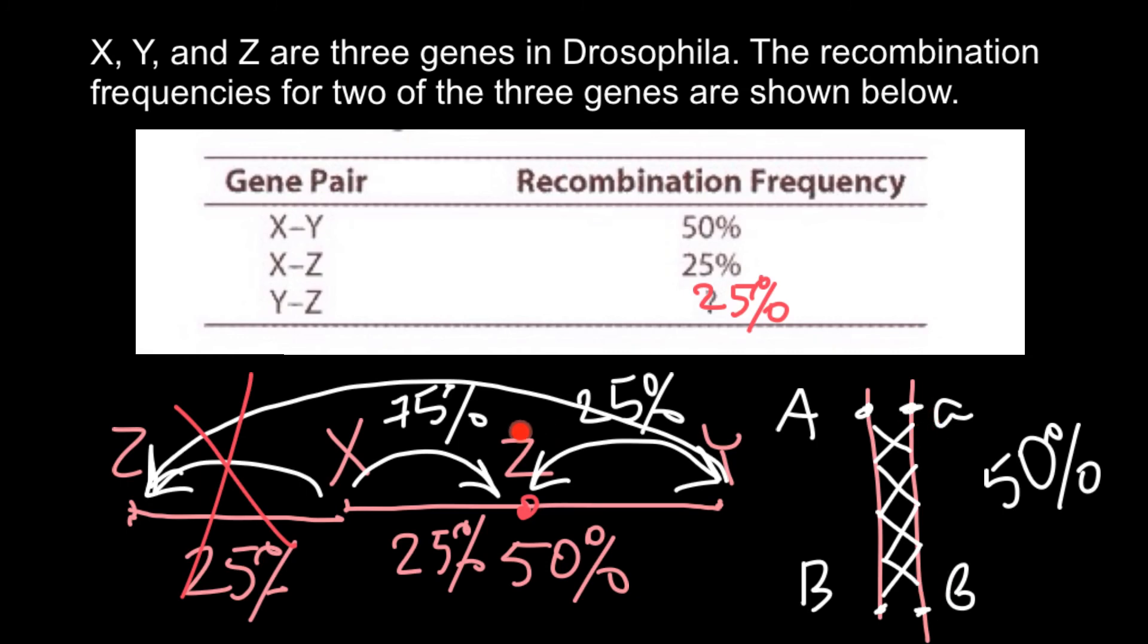So if the question would be in centimorgans, what's the distance between genes Z and Y? We can say 25 centimorgans. And between Z and X also would be 25 centimorgans. So 1% of the recombination frequency equals to 1 map unit or 1 centimorgan.